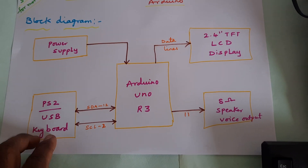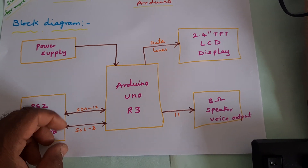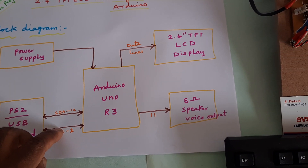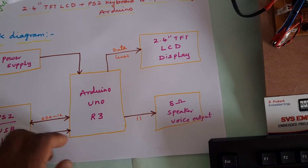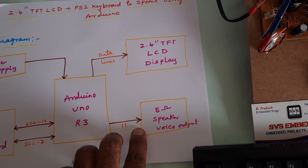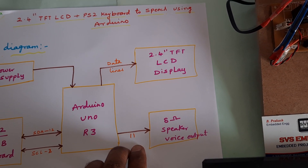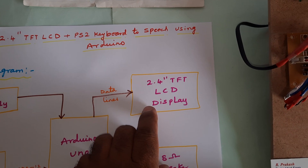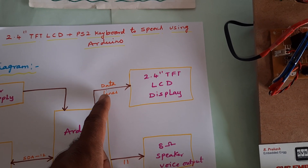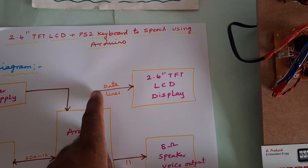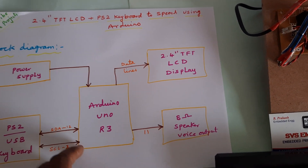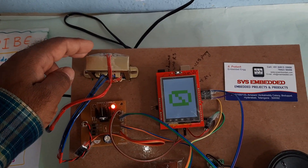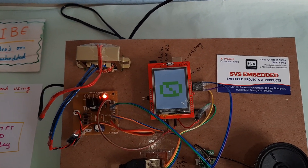We are using a computer keyboard. Those are connected with SCL, SDA pins 12 and the second pin — serial data and serial clock. An 8 ohm speaker is connected to the 11th pin. The 2.4 inch TFT LCD touch screen display module is connected with the remaining data lines and a 5 volt power supply, 230 volt input.